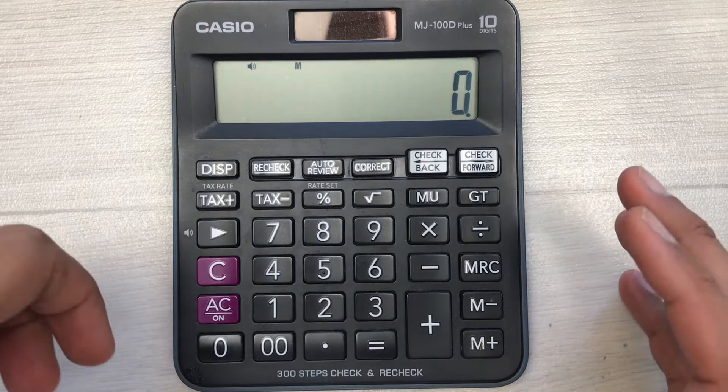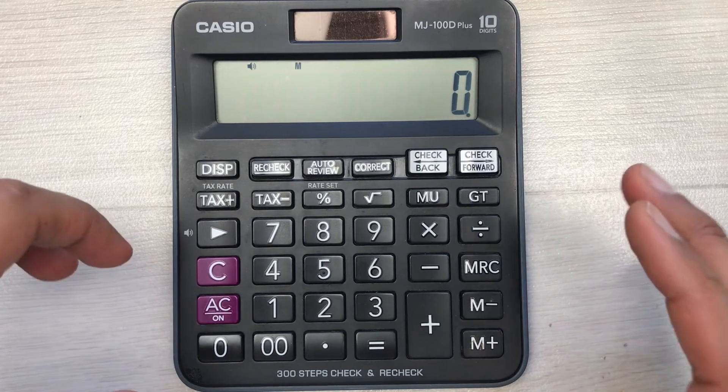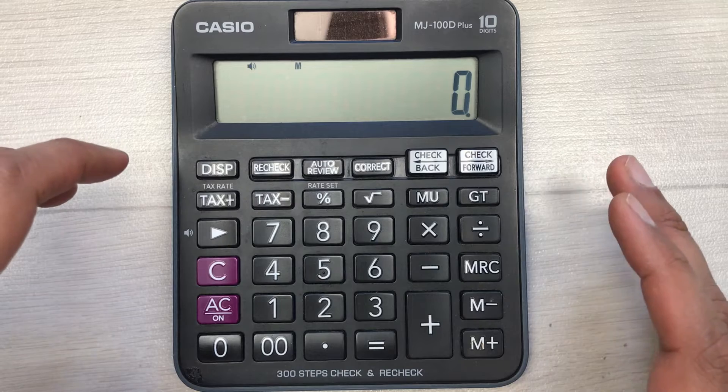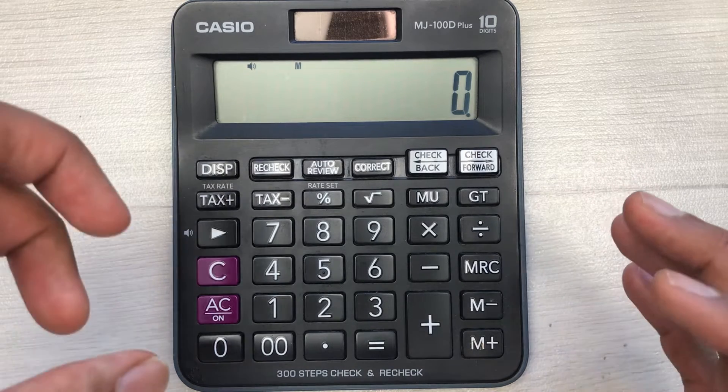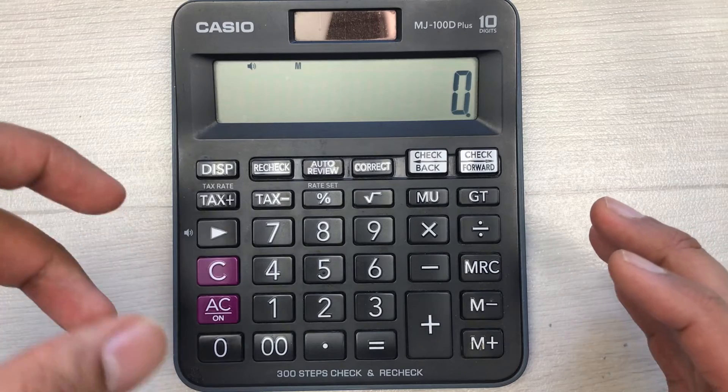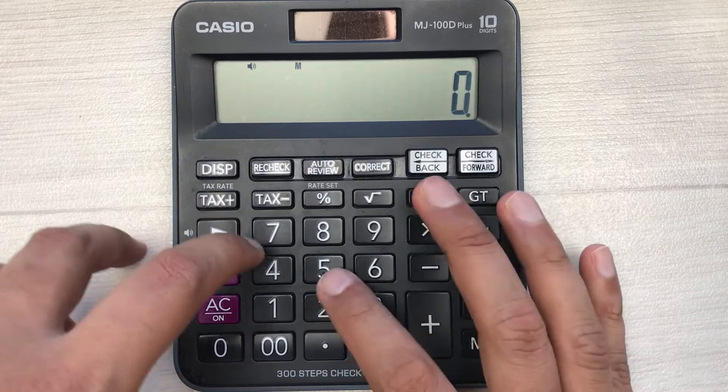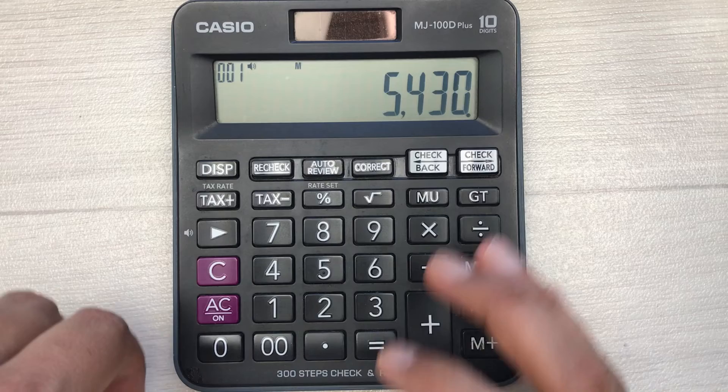Hello guys, I hope you are doing really well. In today's video I am going to show you how to calculate 60% discount. For example, you want to buy a trouser and the price of the trouser is 5430, and the shopkeeper says to you that he will give you 60% discount.